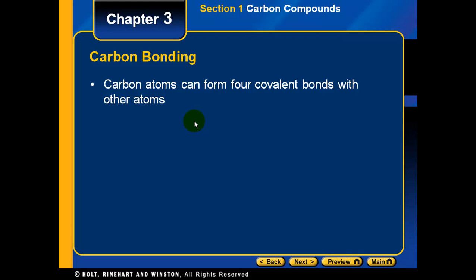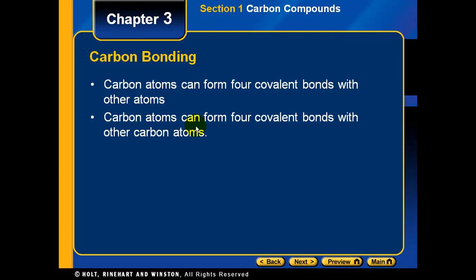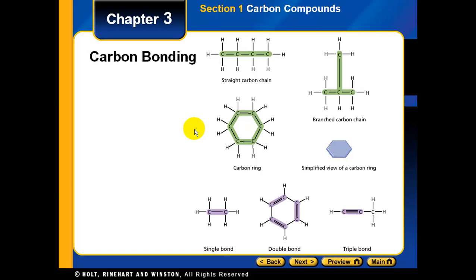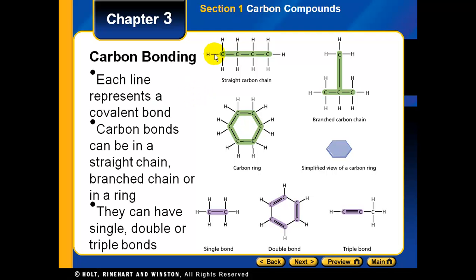Carbon bonding review: carbon can form up to four covalent bonds with other atoms because it has four valence electrons in its outer energy level. Carbon atoms can form four covalent bonds with other carbon atoms as well. This bonding allows carbon to form a wide variety of simple and very complex organic compounds. For this chapter, we're only concerned with covalent bonds, not ionic bonds.